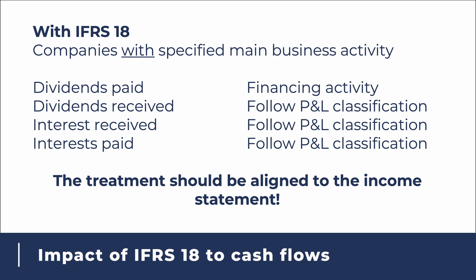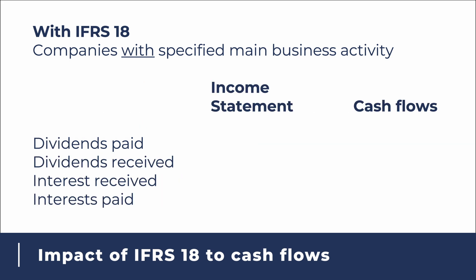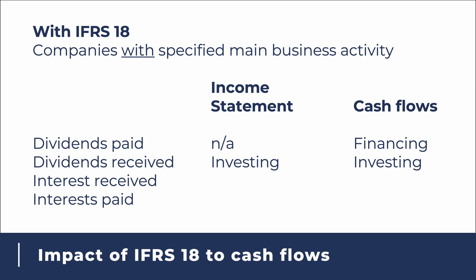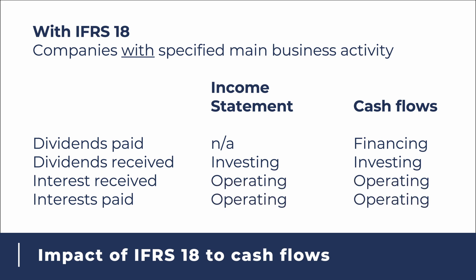That is the main requirement of IFRS 18. This means that if the company has a specified main business activity of providing financing to customers, and the interest received has been classified as operating activity in the income statement, then it should also be an operating activity in the statement of cash flows. For example, for a bank: dividends paid would appear as a financing activity in the cash flows; dividends received would be an investing activity in both the income statement and cash flows; and both interest received and interest paid are part of day-to-day operations, so they are both operating activities in the income statement and in the cash flows.